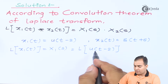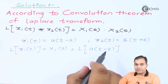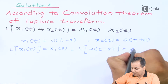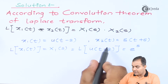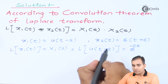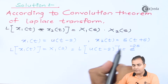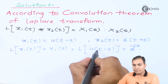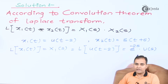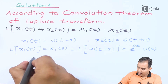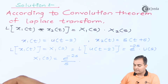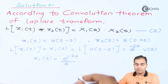According to the time-shifting property, if a function is delayed by some value, we multiply e to the power of s times that delayed value. Here the delayed value is -2, so according to the time-shifting property we multiply e to the power of -2s, then find the Laplace transform of the unit step function u(t), which is 1/s. Therefore X1(s) = e^(-2s) / s. This is Equation 1.